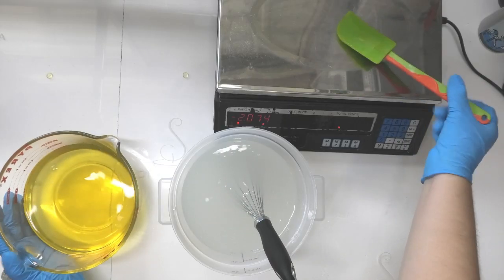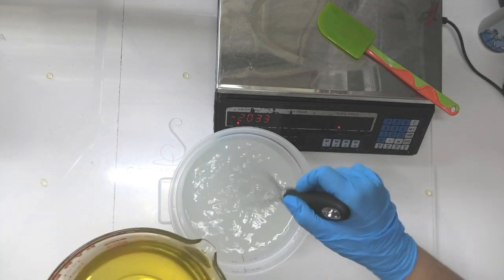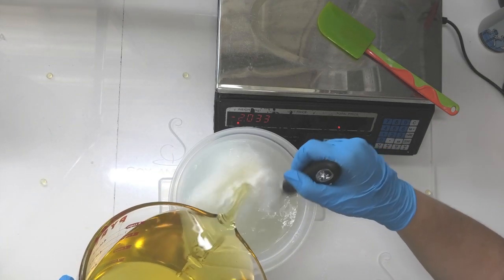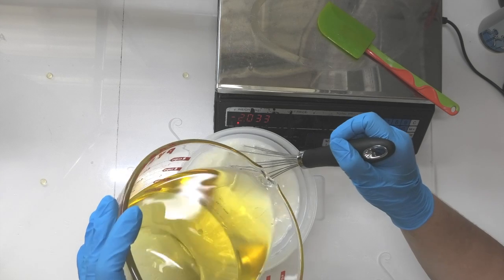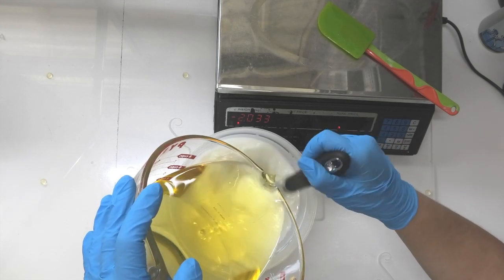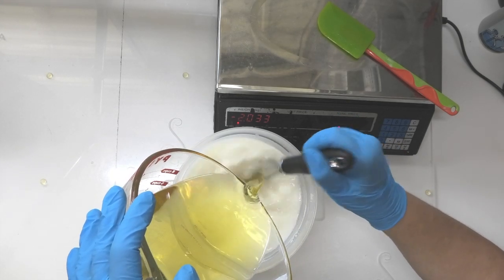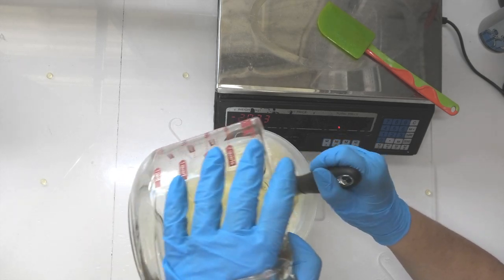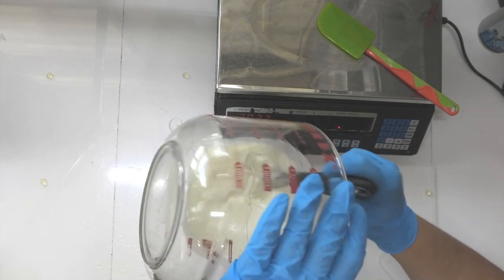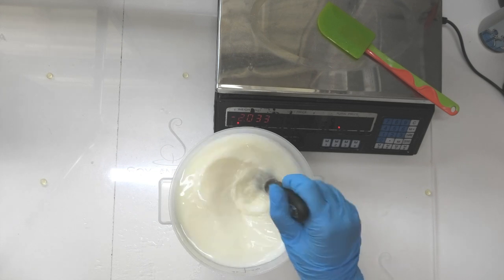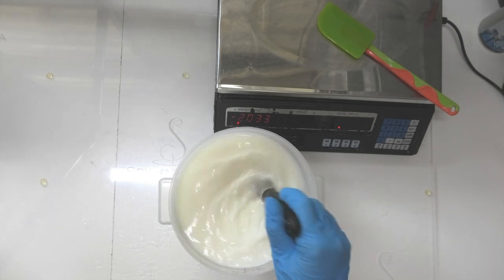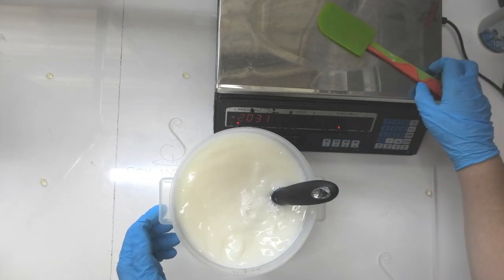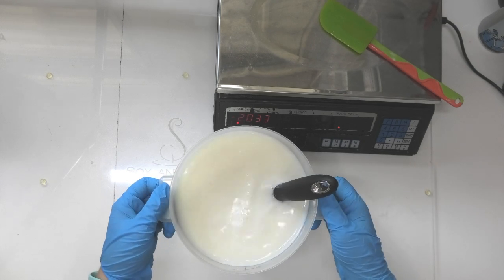So just going to whisk all that together, and then hopefully this pot's big enough. I've actually increased my batch size today. Whoops! And I hate this pouring jug. I'm just going to blend all that in there. Now I know the number one question I am going to get is how to make that into a clear solution.